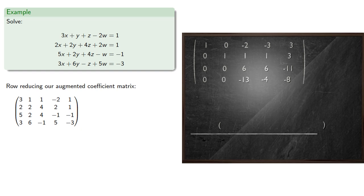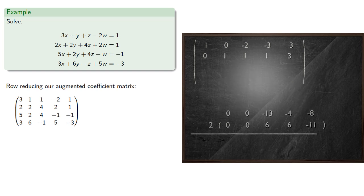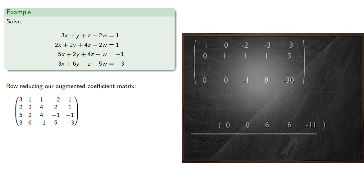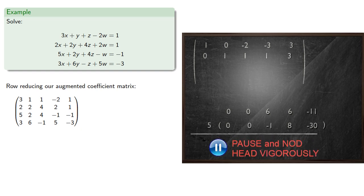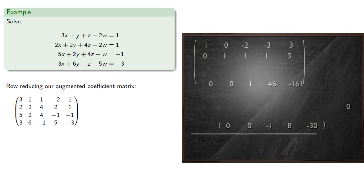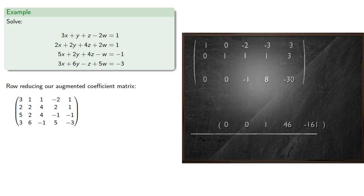Now in the third row, our leading coefficient is 6, which is smaller in absolute value than the other coefficient. Since that coefficient is actually negative, this means we'll actually want to add the third row to the fourth row twice, giving us a new fourth row. Now we'll want to reduce the leading coefficient of the third row down to 1, and so we can do that by adding the fourth row five times. And now the third row has leading coefficient 1, and we can use this row to clear out the entries above and below the pivot.